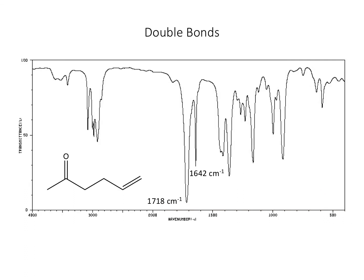Double bonds typically appear between 1,600 and 1,800 wavenumbers. This molecule has two double bonds, so we'd expect to see two peaks in that region — and we do. This is pretty typical of a carbon-carbon double bond, and this is typical of a carbon-oxygen double bond. The carbon-carbon double bond is thinner and less broad than the carbon-oxygen double bond, it's lower intensity, and it's at a slightly lower frequency.